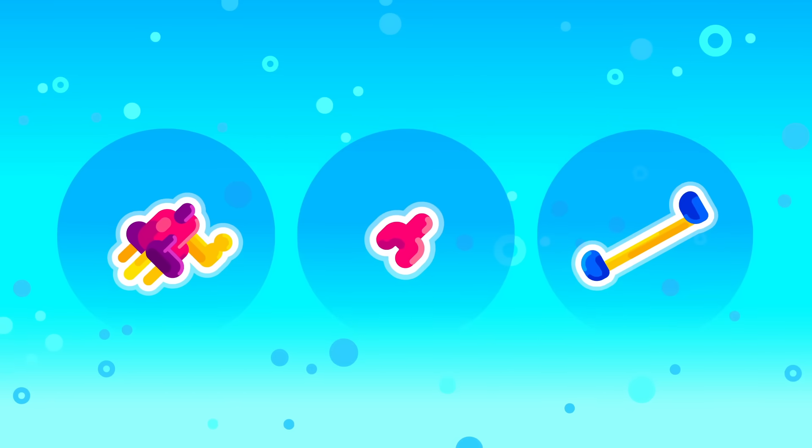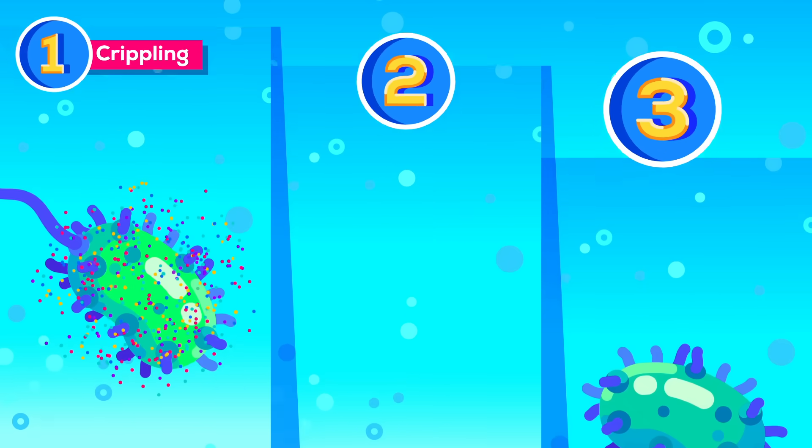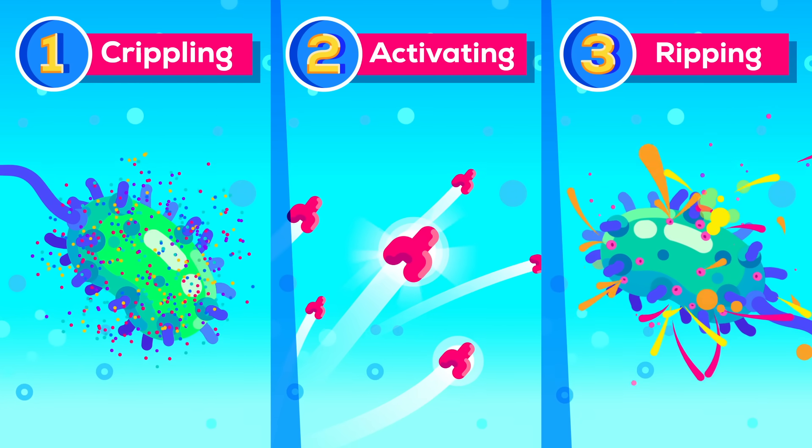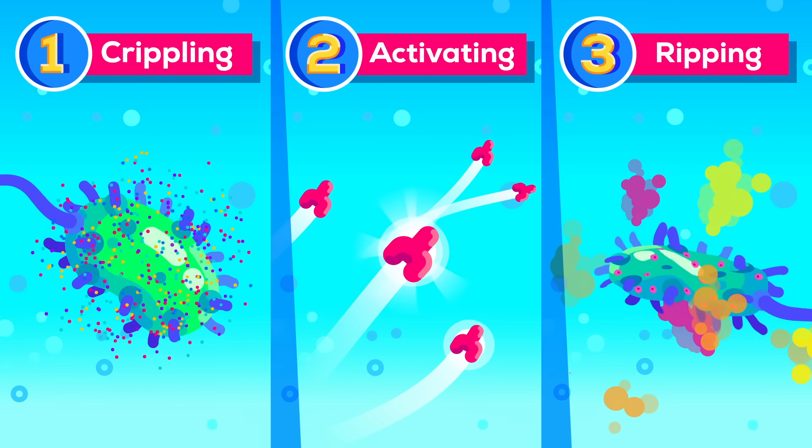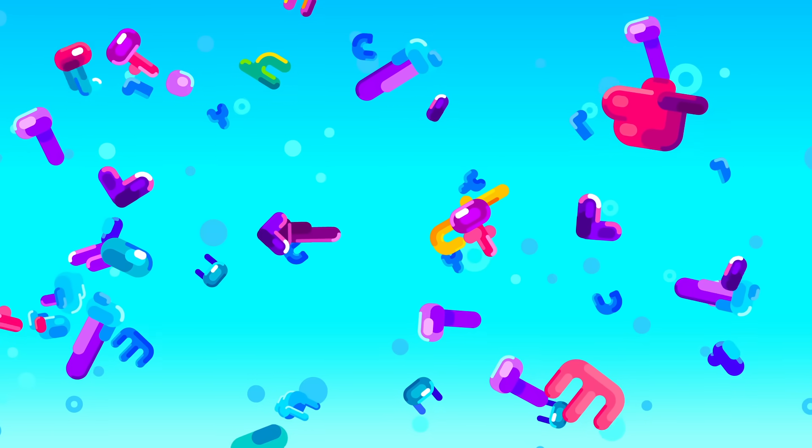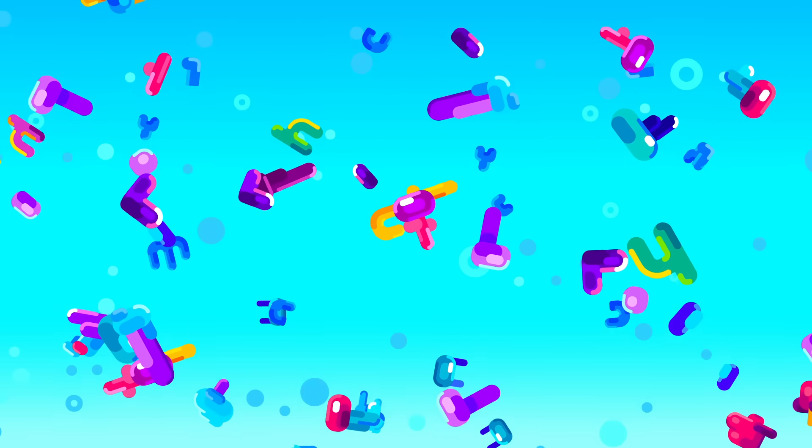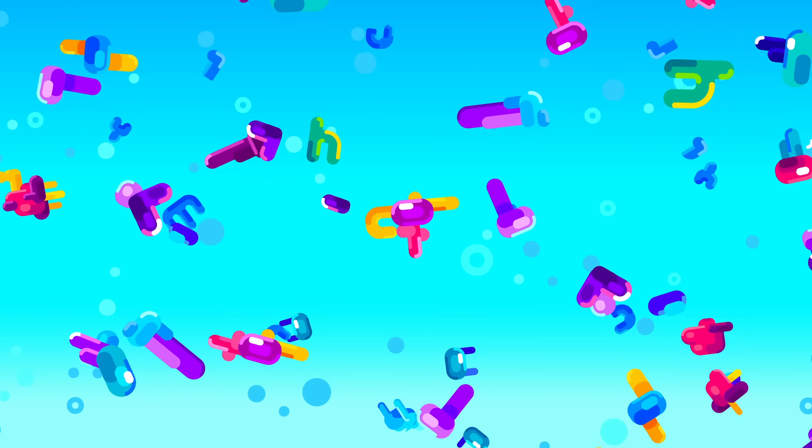In a nutshell, the complement system does three things. It cripples enemies, it activates the immune system, and it rips holes in things until they die. But how? After all, these are mindless proteins randomly drifting around without will or direction. Well, this is actually part of the strategy.